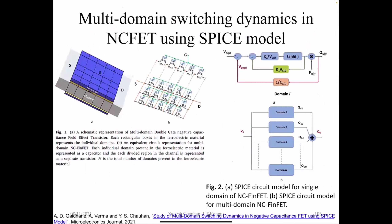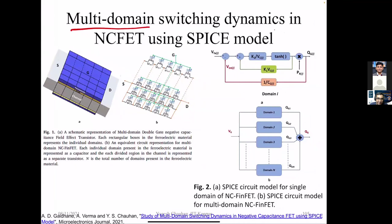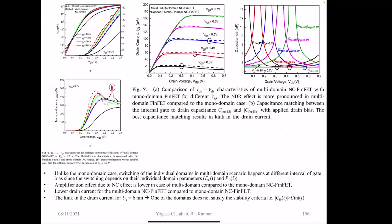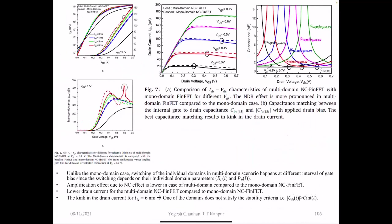In the multi-domain SPICE model, unlike the monodomain case, switching of individual domains happens at different gate voltage intervals depending on their internal domain parameters. The amplification effect due to NC is lowered in multi-domain, giving lower drain current with even a kink in drain current. One of the domains does not satisfy the stability criteria for the ferroelectric, which is why we start seeing kinks in IDVG and GM. We also analyzed drain-extended MOSFETs for high voltage switching and analog applications.